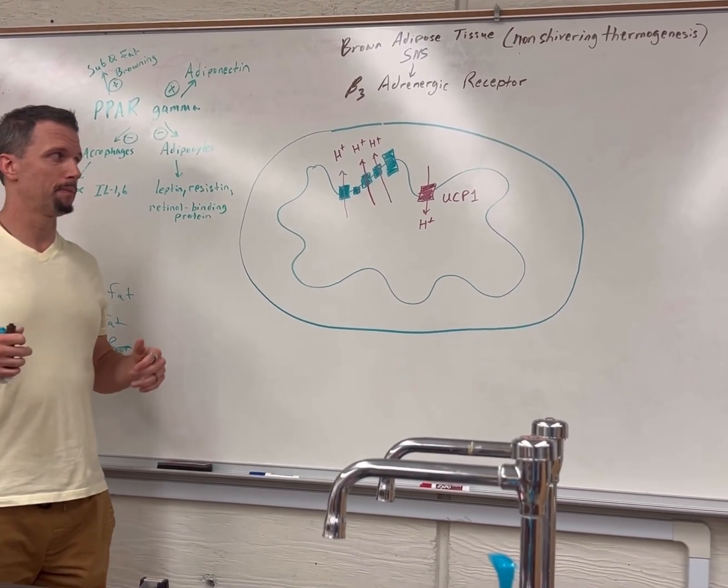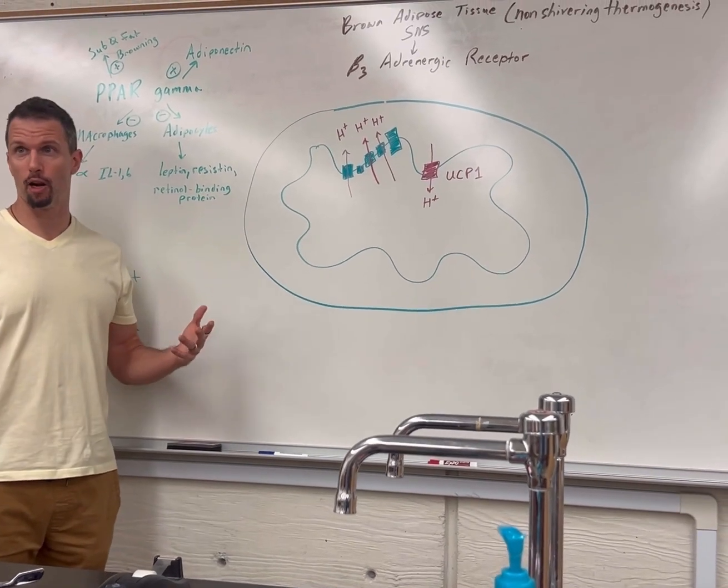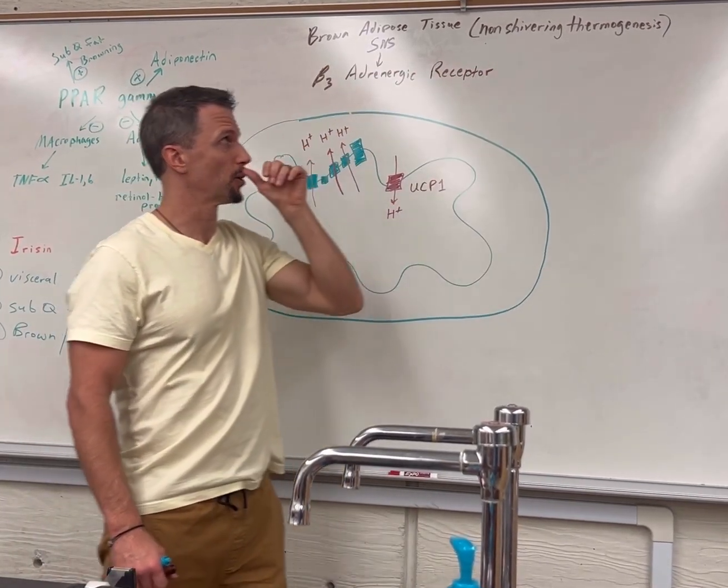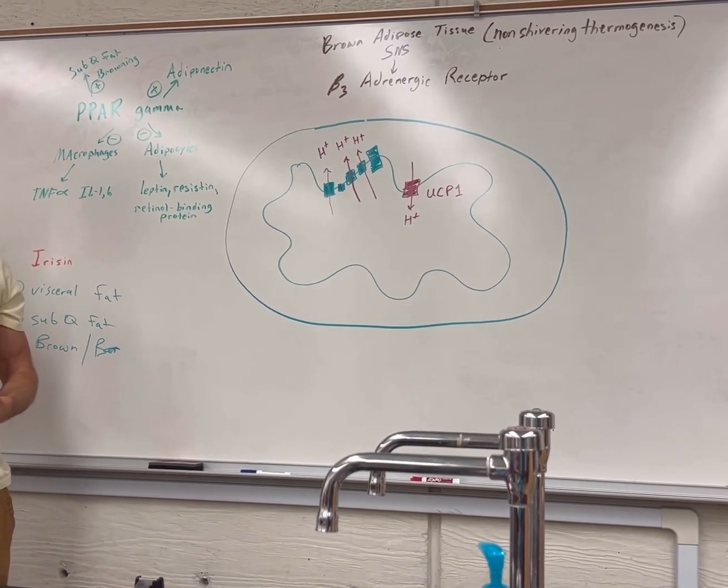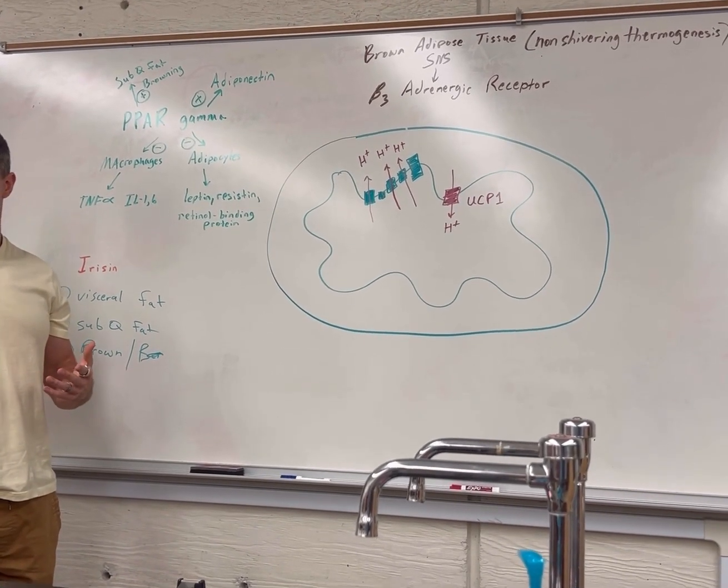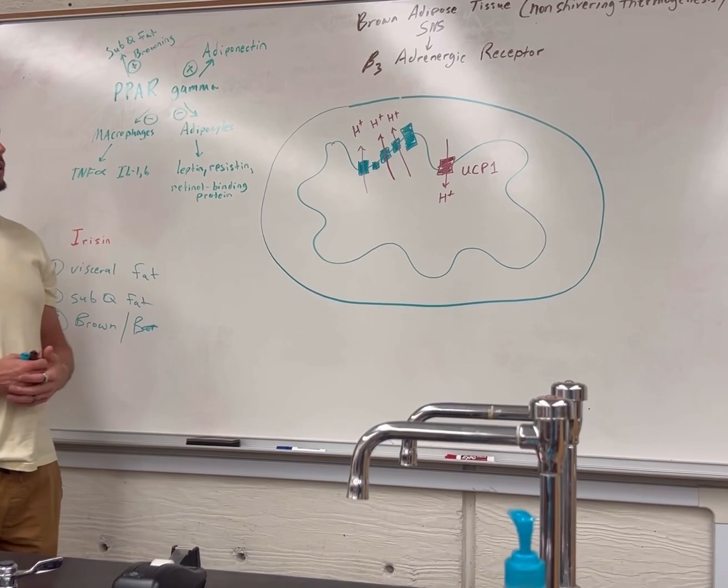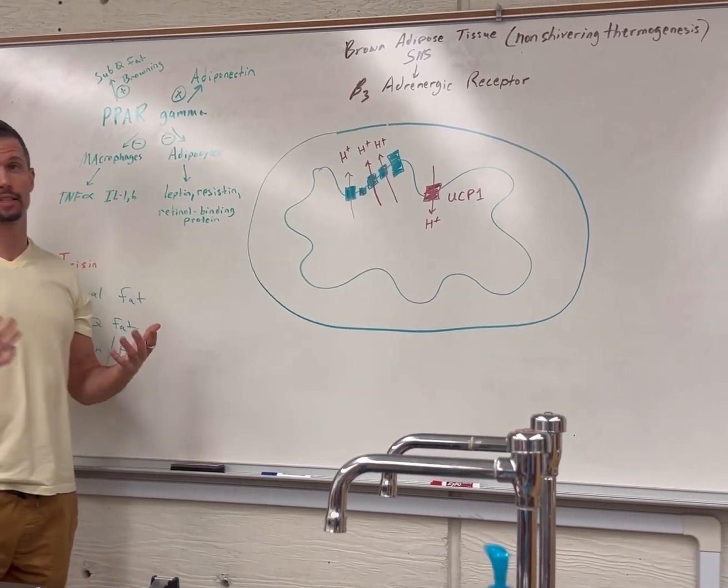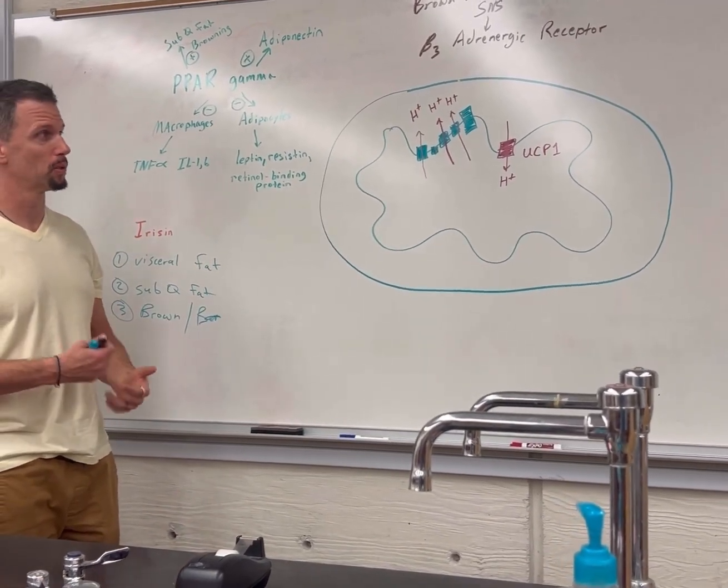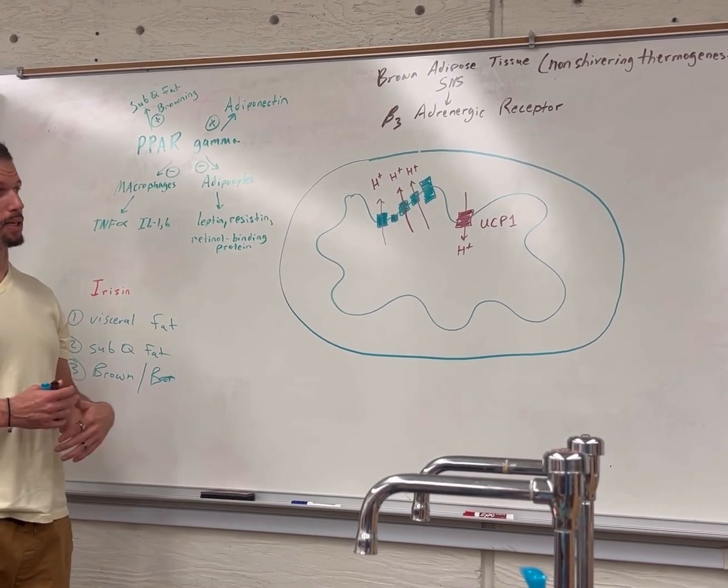As adults we typically only have brown adipose tissue above our clavicles, so supraclavicular, and in between our shoulder blades, interscapular. When we're babies we have a lot dispersed all over. This makes sense because brown adipose tissue is for non-shivering thermogenesis. A baby has a high surface area to volume ratio and doesn't have good muscle yet to shiver. Because of that huge surface area, they need more non-shivering thermogenesis to generate heat.